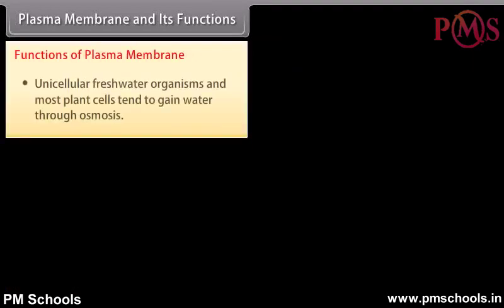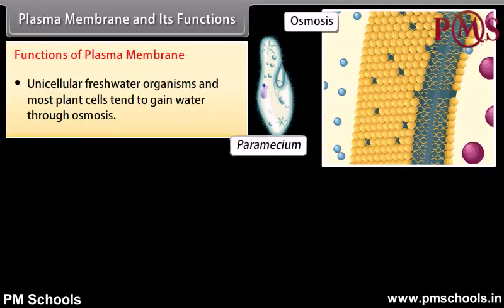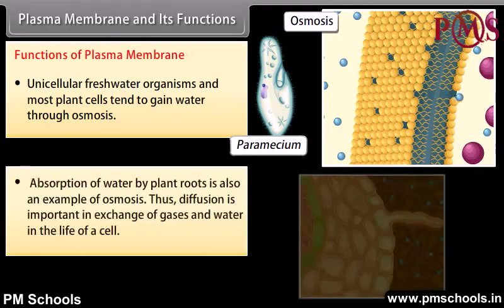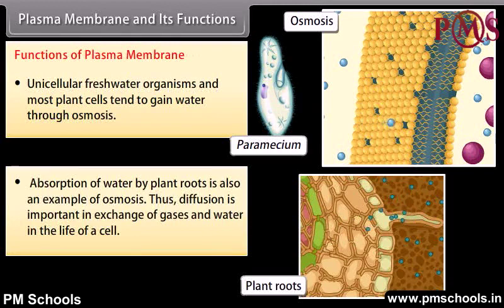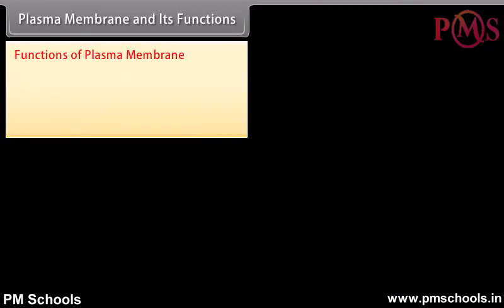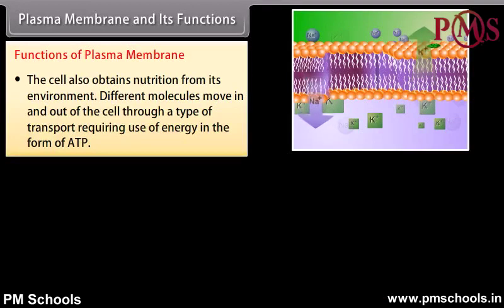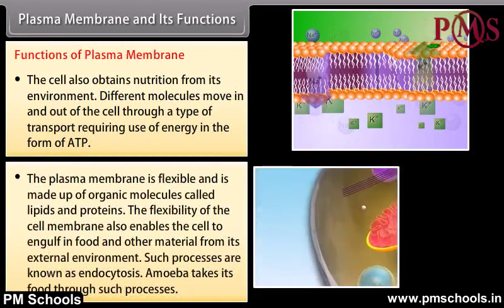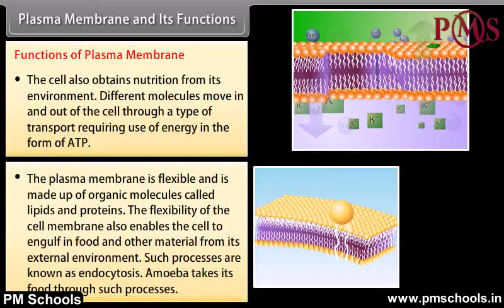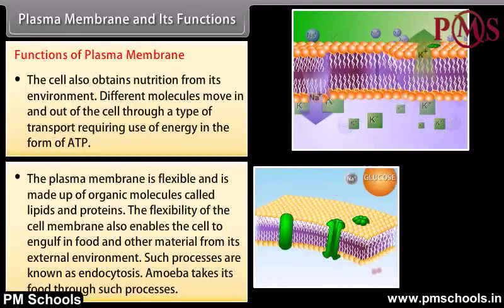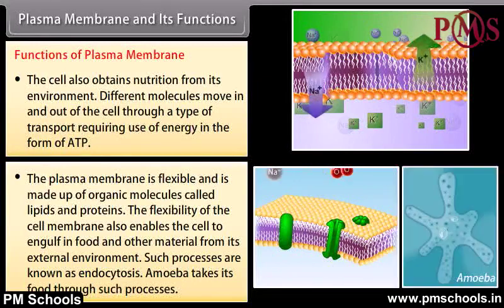Unicellular freshwater organisms and most plant cells tend to gain water through osmosis. Absorption of water by plant roots is also an example of osmosis. The cell also obtains nutrition from its environment; different molecules move in and out through a type of transport requiring energy in the form of ATP. The plasma membrane is flexible and made up of organic molecules called lipids and proteins. This flexibility enables the cell to engulf food and other materials from its environment, a process known as endocytosis — Amoeba takes its food through such processes.